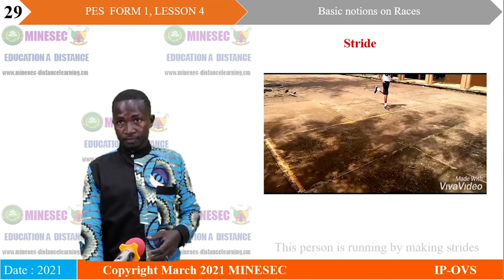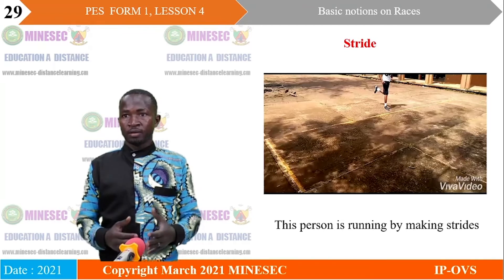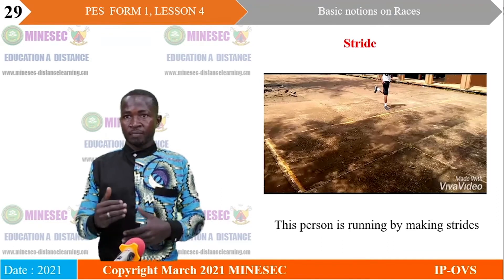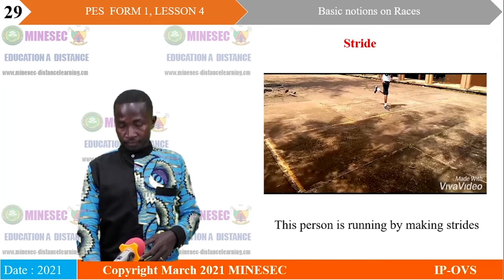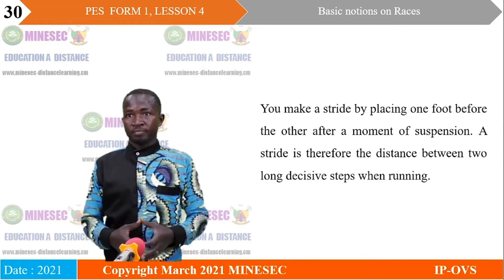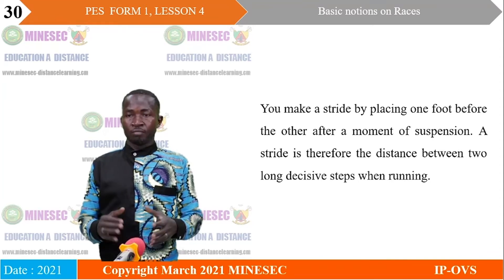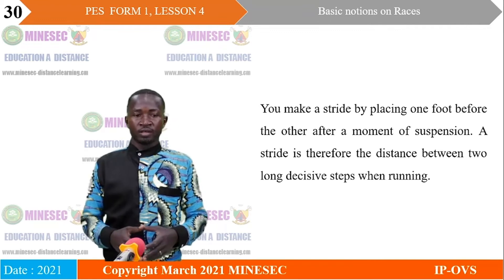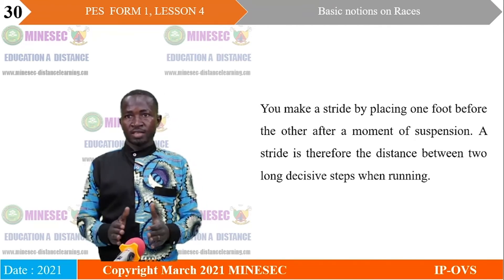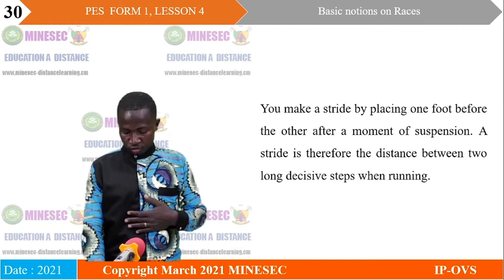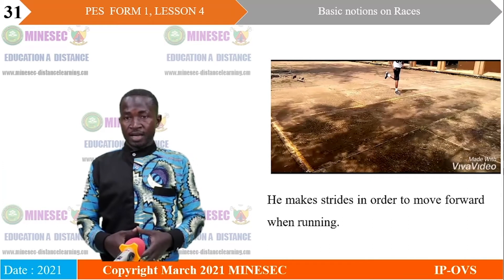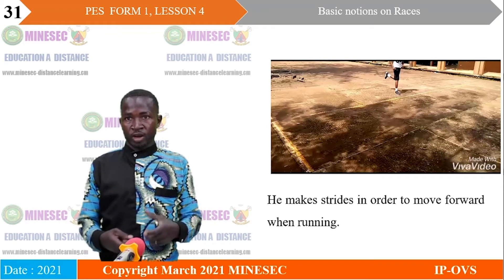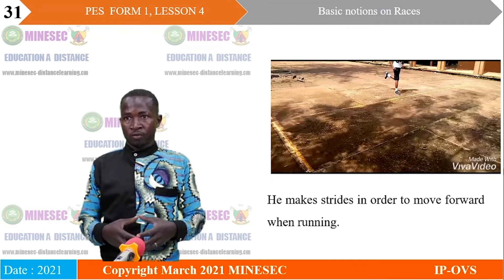Now let us look at strides. This person is running by making strides. Strides are successive steps placed at regular intervals. You make a stride by placing one foot before the other after a moment of suspension. A stride is the distance between two long decisive steps when running. It is the frequency of strides that you make which propels you forward during running.